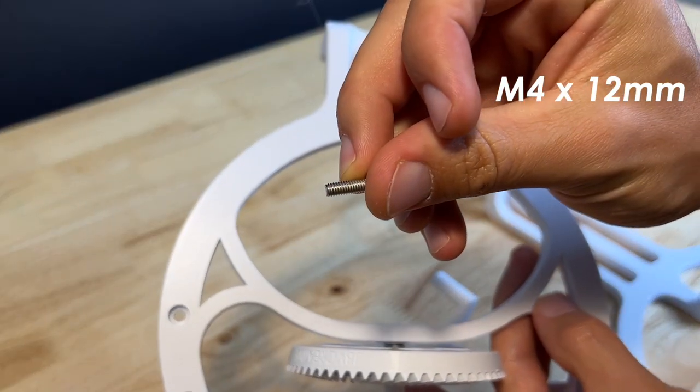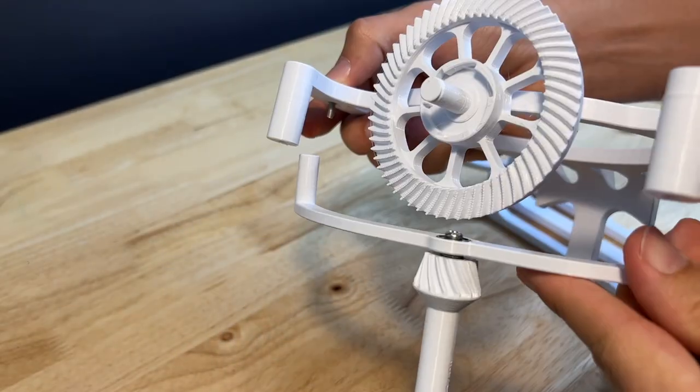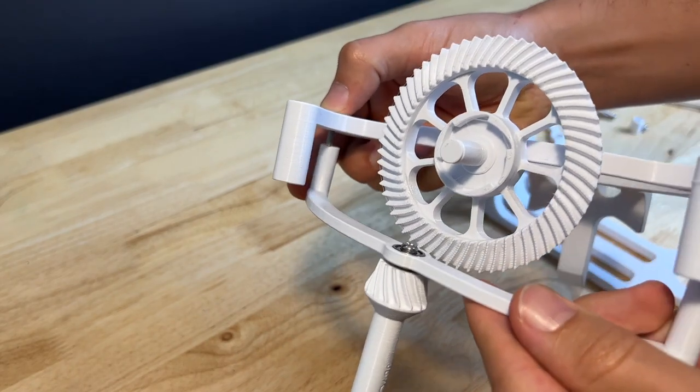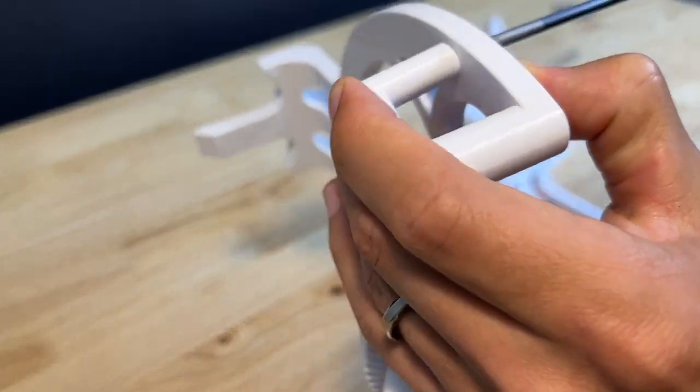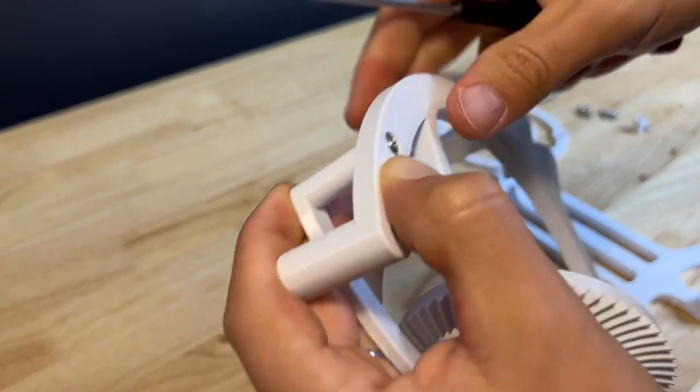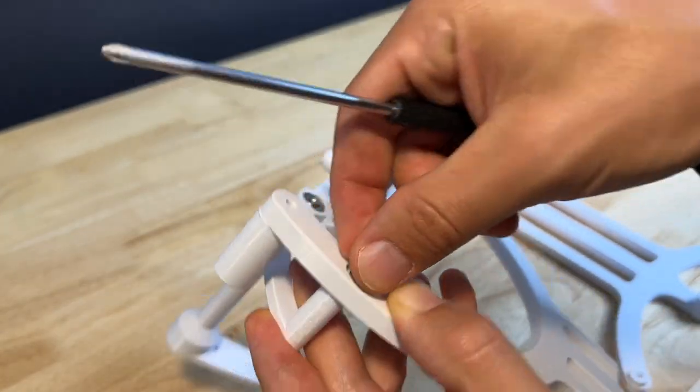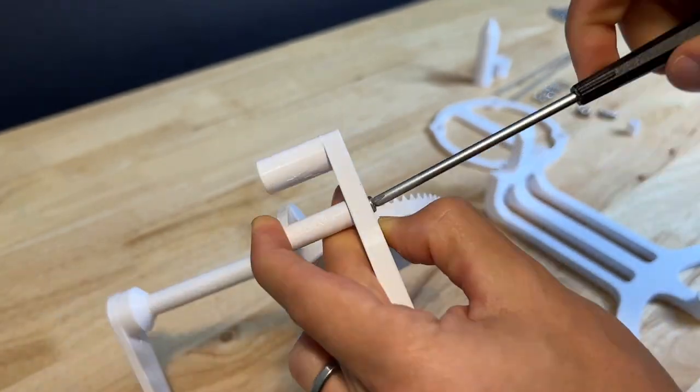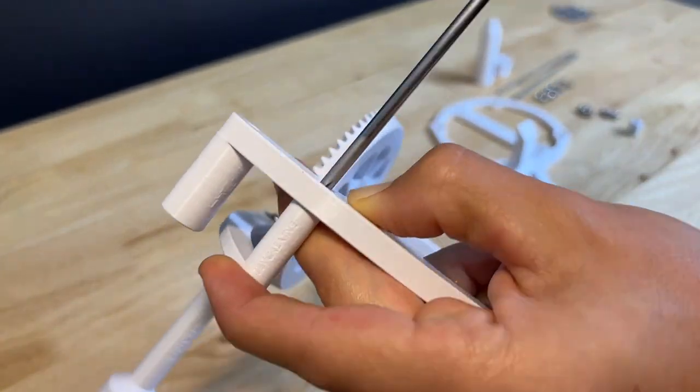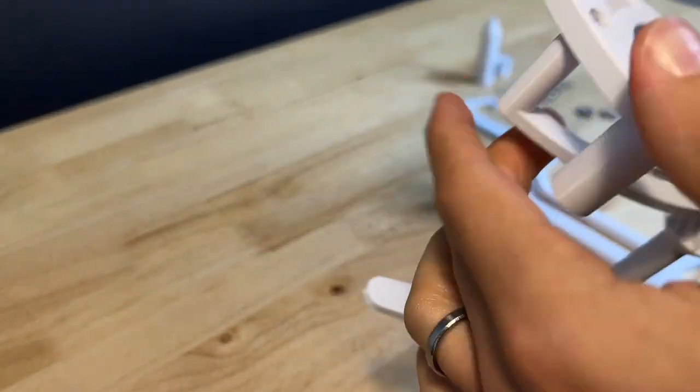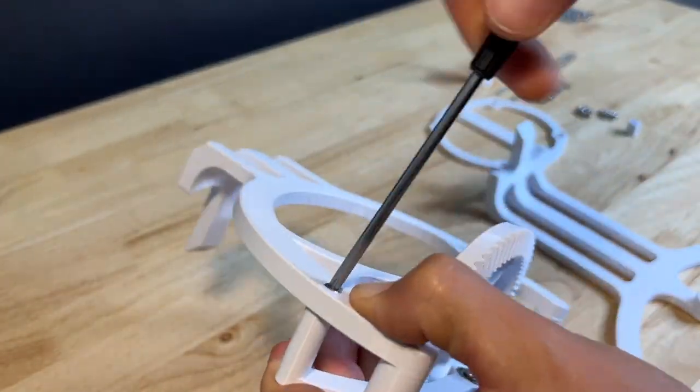Using an M4 by 12 millimeter screw, throw it into the bottom of the base and then screw that screw into one side of this mount. Before it's tight, line up the other hole. Screw another screw into this side. And then you can tighten this all the way down. And then when that's tight, you can tighten the other one all the way down as well, just to make sure that everything is aligned well.